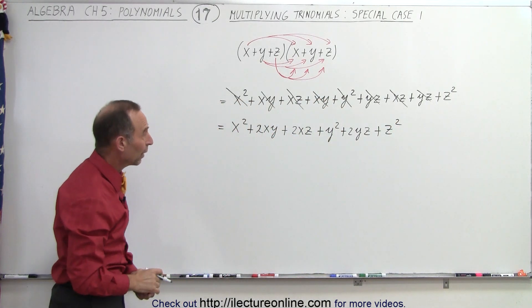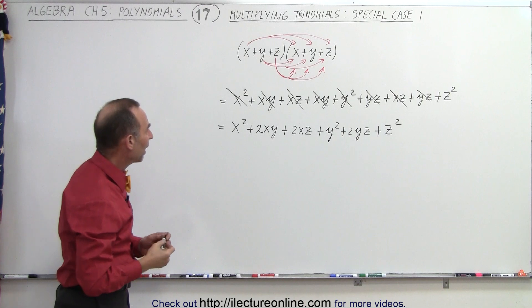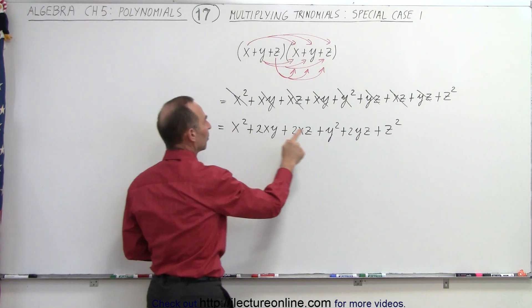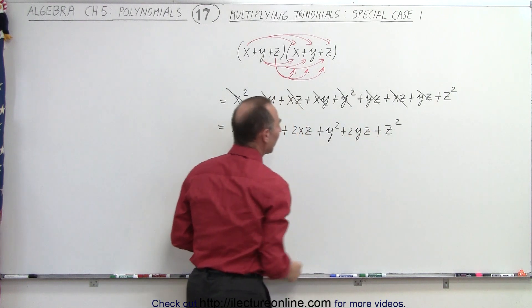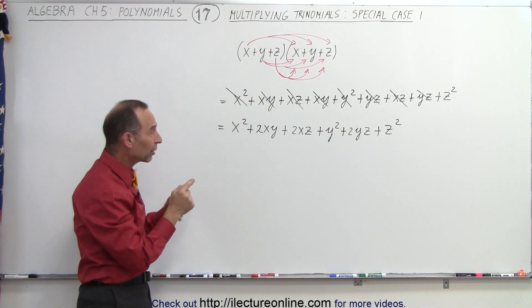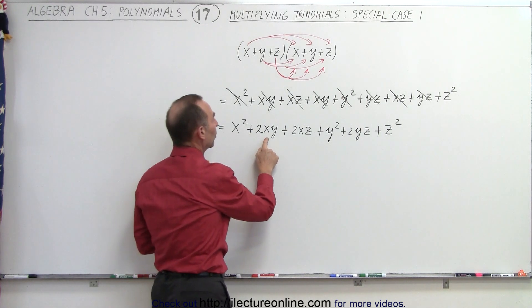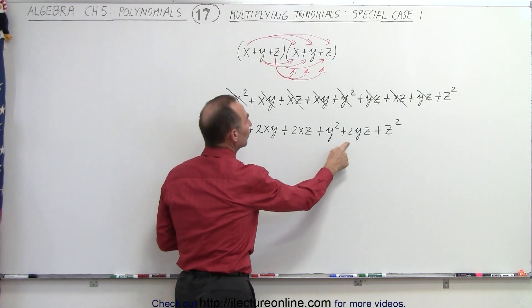And notice that is as simple as we can write it, which means we have the three squared terms, x² + y² + z². And then the other three terms are twice the product of any combination of the two variables. 2xy, 2xz, and 2yz.